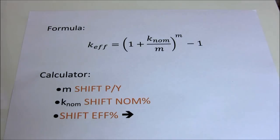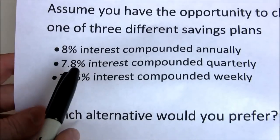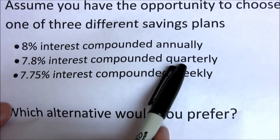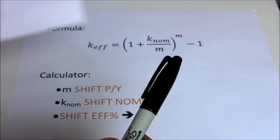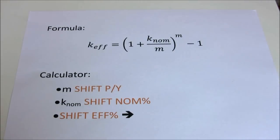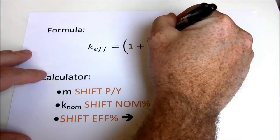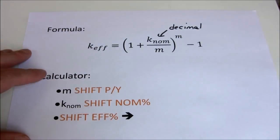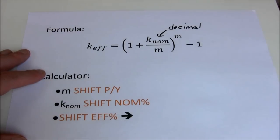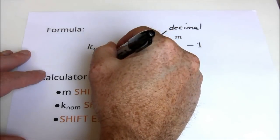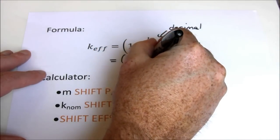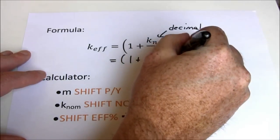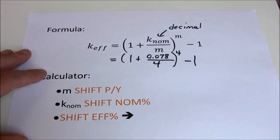In our compounded quarterly example, our nominal rate is 7.8%. Since we're compounding quarterly, there are 4 periods per year. One important thing to be careful about: the nominal rate has to be a decimal. Don't plug it in as 7.8 — it has to be 0.078. So we have 1 plus 0.078 over 4, raised to the 4th power, minus 1.